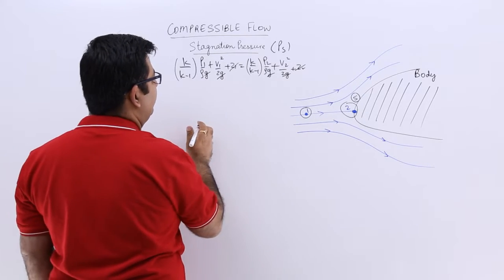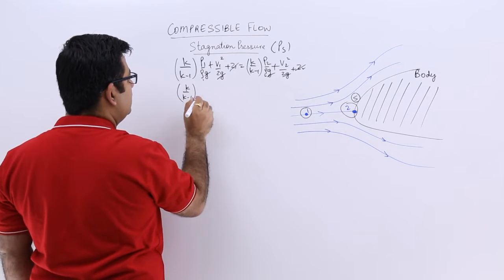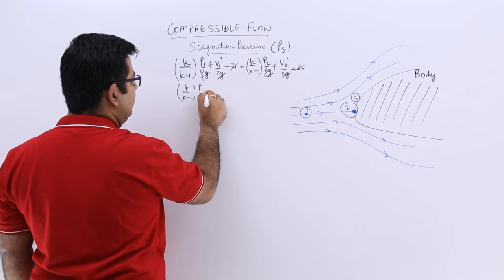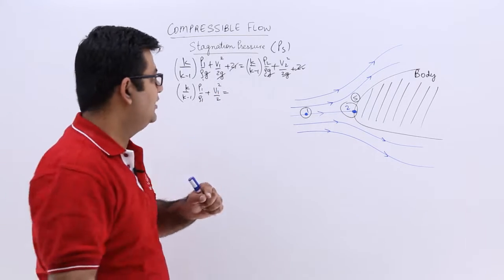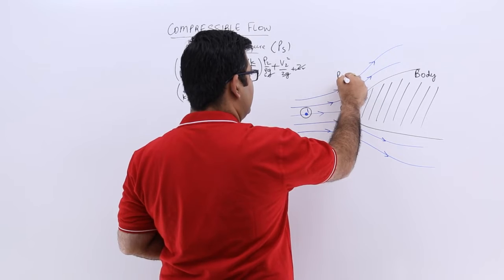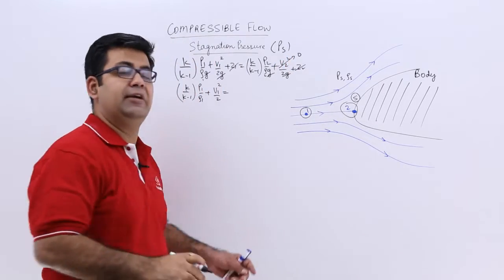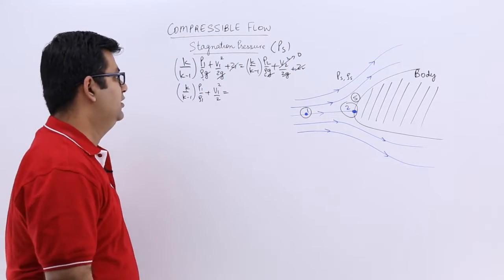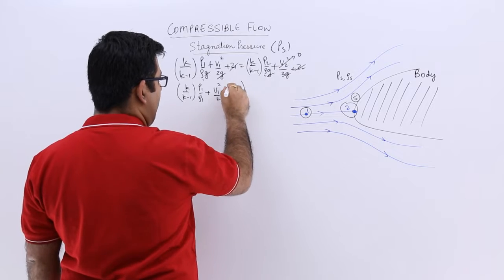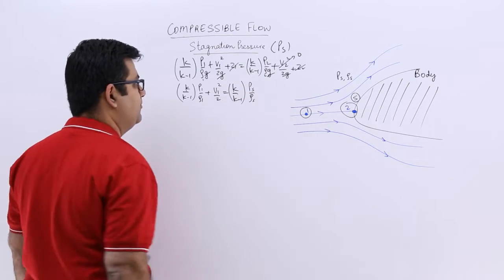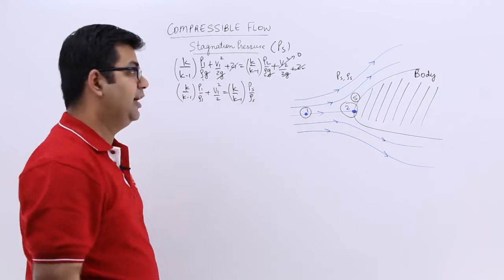So the equation that is left — this is 1 and this is 2 — is: k upon k minus 1 into p1 by ρ1 plus v1² by 2 equals the right-hand side. At point 2, let us say the pressure is ps and the density changes to ρs. The velocity will become 0 because it is the point where the entire flow becomes stagnant. So v2 = 0, giving k upon k minus 1 into ps upon ρs.